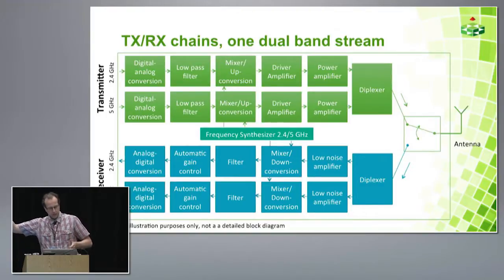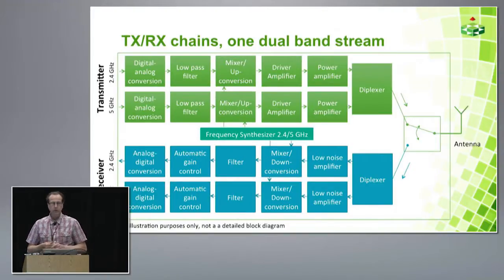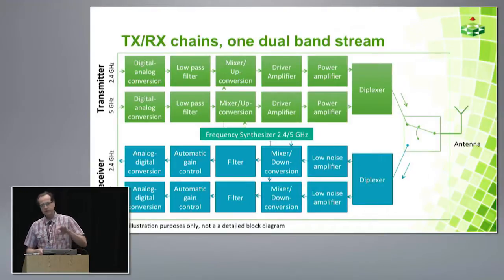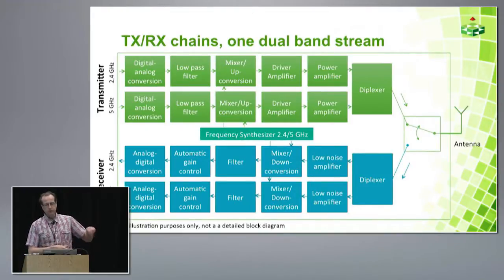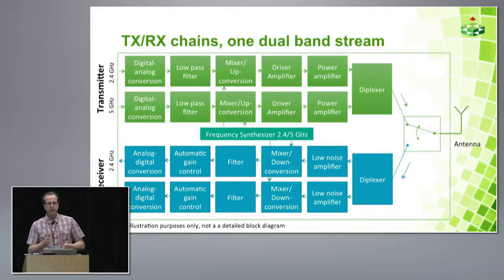When the received signal comes in, it first goes through the diplexer, which splits it to the 5 GHz and 2.4 GHz receiver chains. The first element in the receiver is a low-noise amplifier, followed by downconversion from RF frequency to a lower frequency, and then filtering. Automatic gain control sets the signal level going to the ADC at an optimal target level. A frequency synthesizer feeds the down-converters and up-converters to achieve the target frequency.